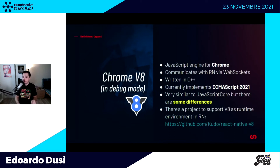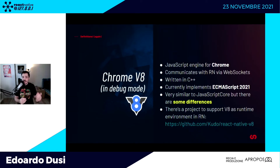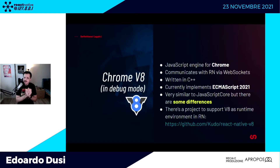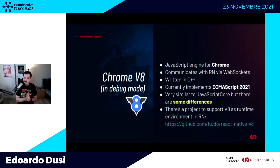Un altro motore JavaScript da tenere presente è Chrome V8. Non è nel bundle React Native, ma quando dal vostro stack locale lanciate il debugger, lanciate Chrome e dentro Chrome gira l'interprete V8, che comunica con React Native attraverso WebSockets. Questo è da tenere presente perché ci sono delle minime differenze tra V8 e JSC: potrebbe capitare che un problema presente in produzione non si riesca a riprodurre su V8 o viceversa. C'è anche un progetto su GitHub per portare V8 in React Native in sostituzione di JSC.